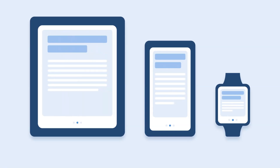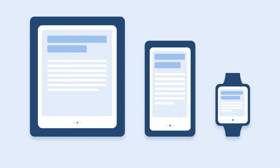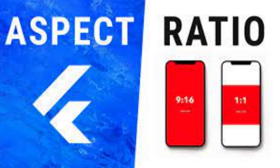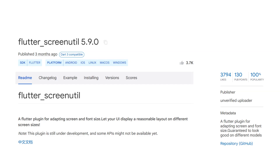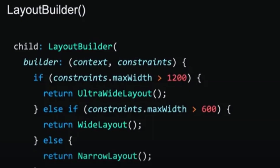If we are making an application for responsiveness for all devices, how can we do that? In Flutter there are a lot of options. Simple options include the Layout Builder widget, Media Query, Aspect Ratio, and also third-party libraries like Flutter Screen Util and Responsive Sizer — I'm adding links in the description.